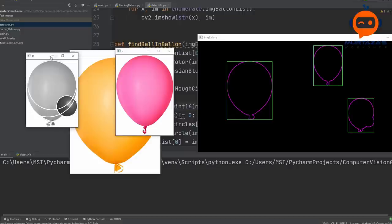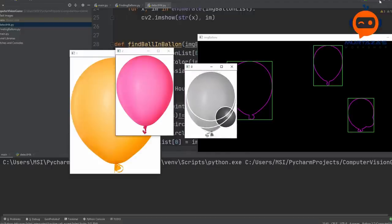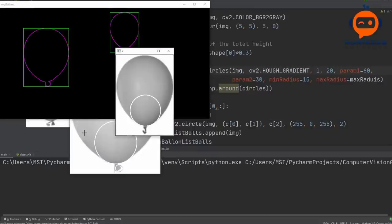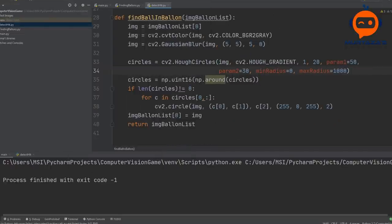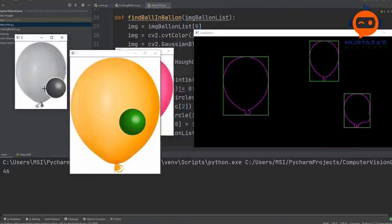Now that the location of the balloon was known, it was time to find the hit within the balloon. I created a new hit module that handles the logic of detecting the hits within these balloons.